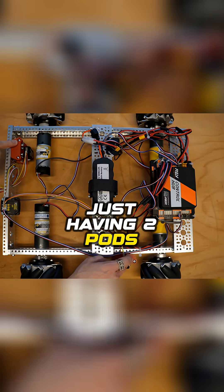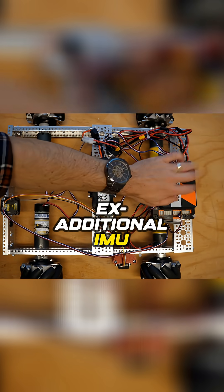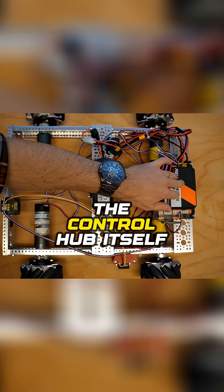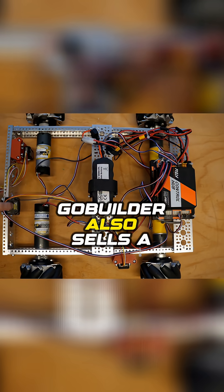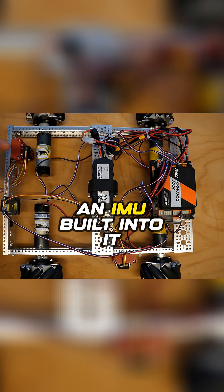The way that some teams get around just having two pods is they add in an additional IMU. You can use the IMU that's attached to the control hub itself. GoBuilder also sells a pinpoint computer that has an IMU built into it.